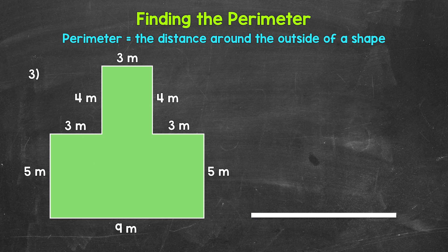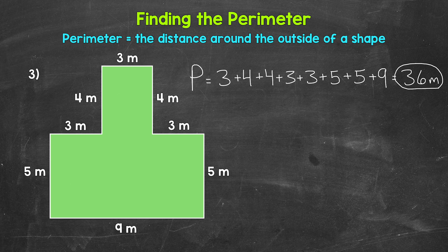All right, so let's check our work here and see how we did. For number three here, the perimeter is 36 meters. And remember, it doesn't matter what order you added the side lengths in. So if your work is different than mine, that's okay. As long as all of the side lengths are included and you got the correct perimeter, that's what matters.